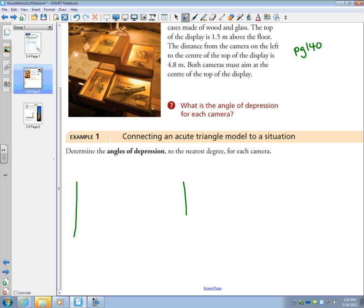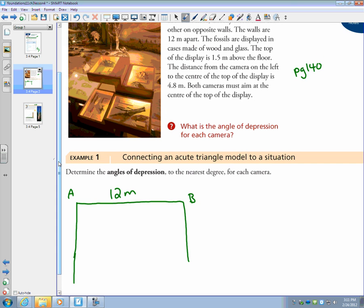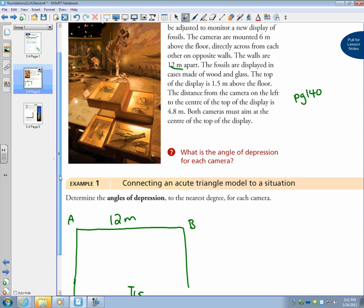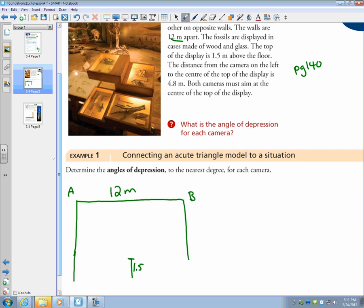Let's draw what's going on. We have two separate walls, and there's cameras. There's camera A, and there's camera B. The distance between those two walls, they told us, was 12 meters. The fossils are displayed in cases made of wood. The top of the display is 1.5 meters off the floor. So let's say our display is right here, and this is 1.5 meters. It also says the cameras are six meters above the floor. So this is six meters, and that's six meters. Maybe I should make my floor be flat.